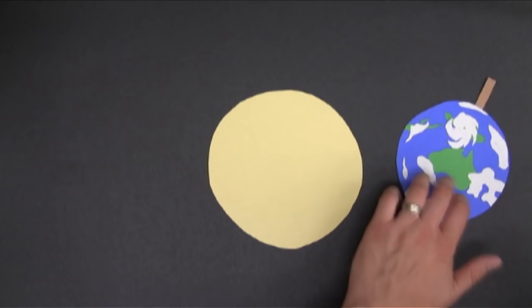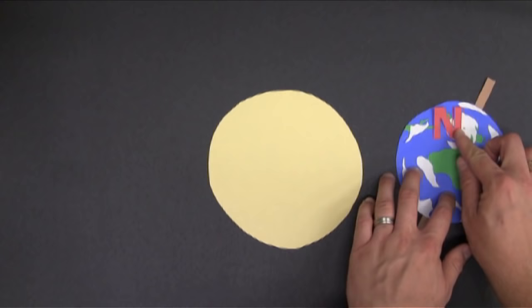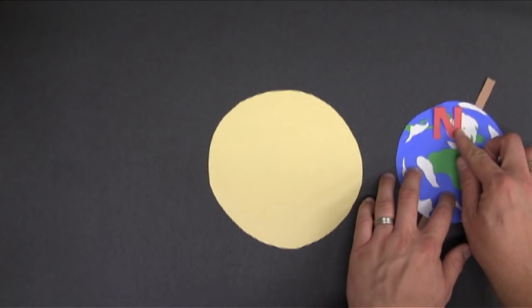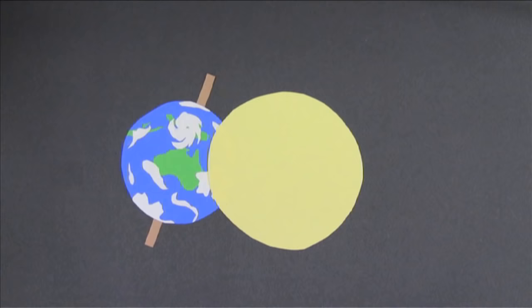So, when the Earth is on this side of the Sun, the Northern Hemisphere is angled away from the Sun. The Southern Hemisphere is angled toward the Sun. When the Earth is revolving around the Sun, it stays tilted in the same position. The axis doesn't wiggle around or anything. It just stays fixed in a certain direction.